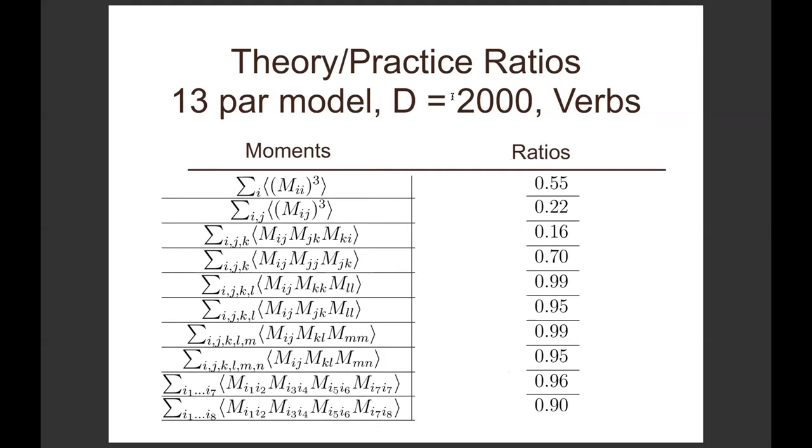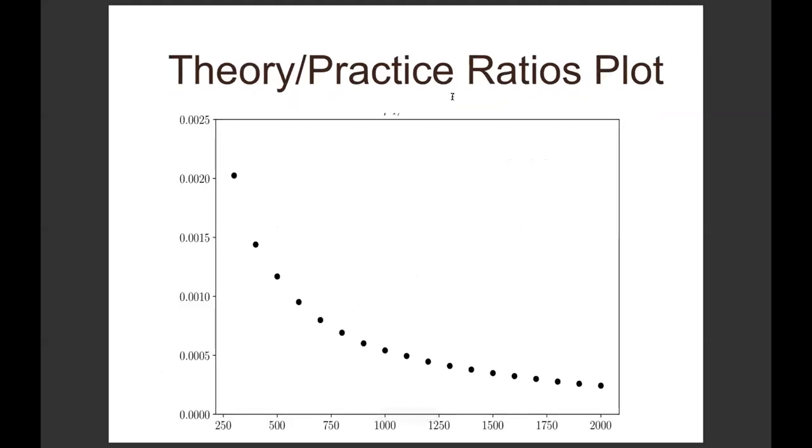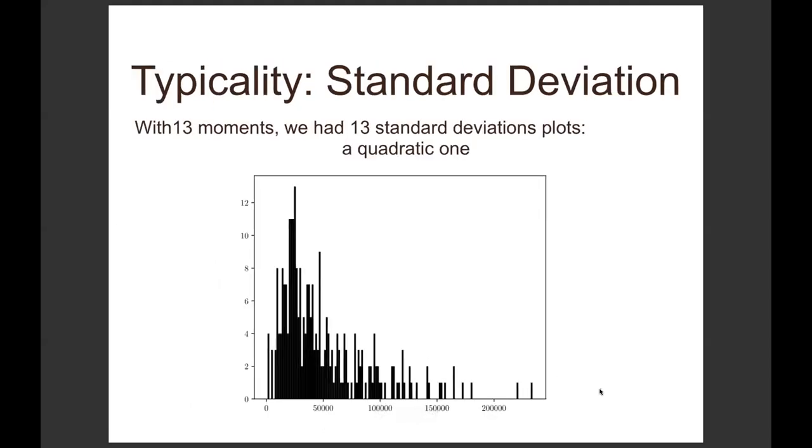Same story for verbs: higher order moments match really well. If you plot the theory-experiment ratios, you'll see that, like in eigenvalue theory, like in random matrix theory at a limit - so here for us is 2000-dimensional spaces - the ratios will converge and they'll become really, really small.